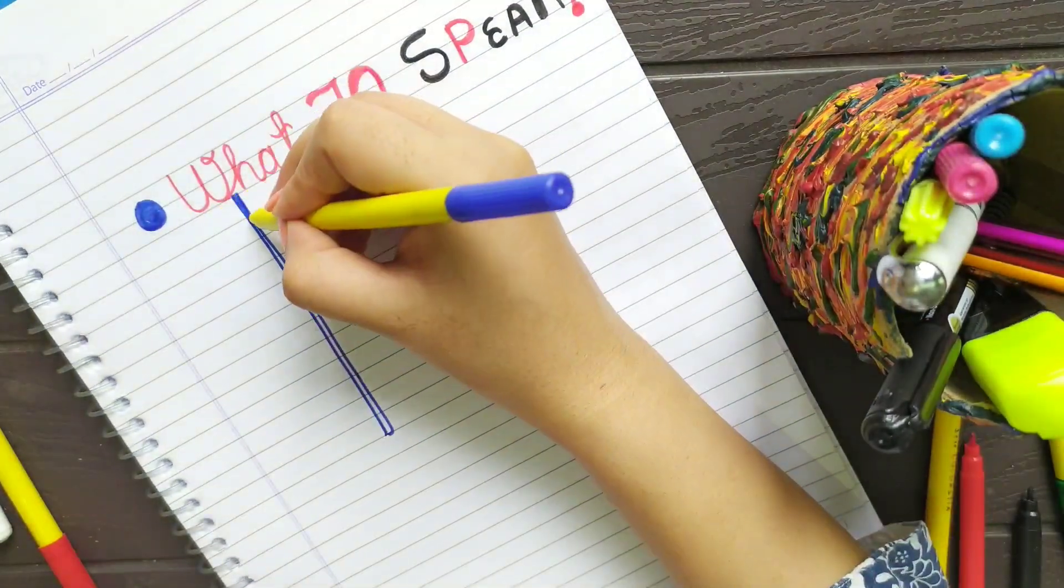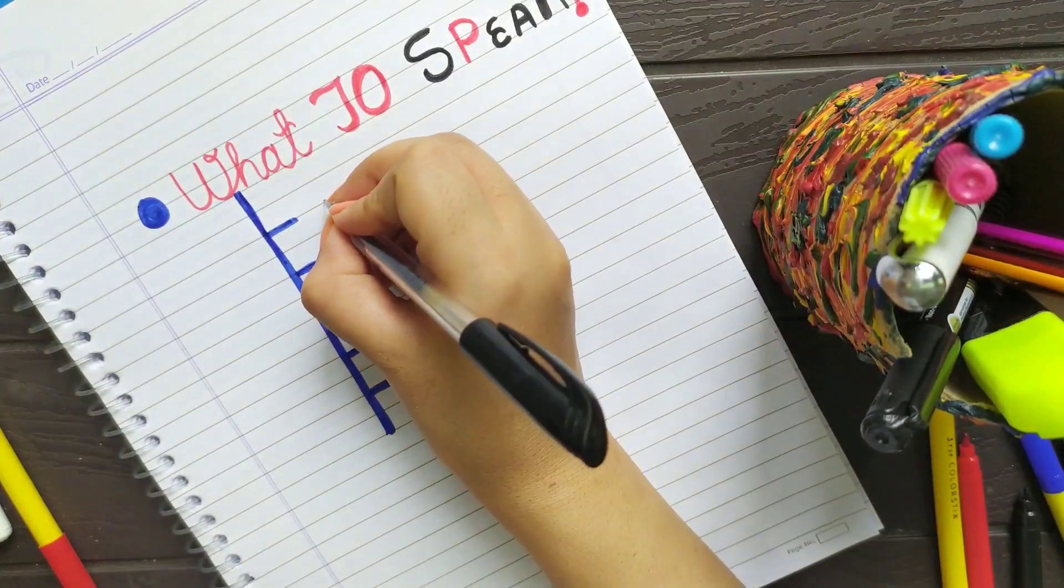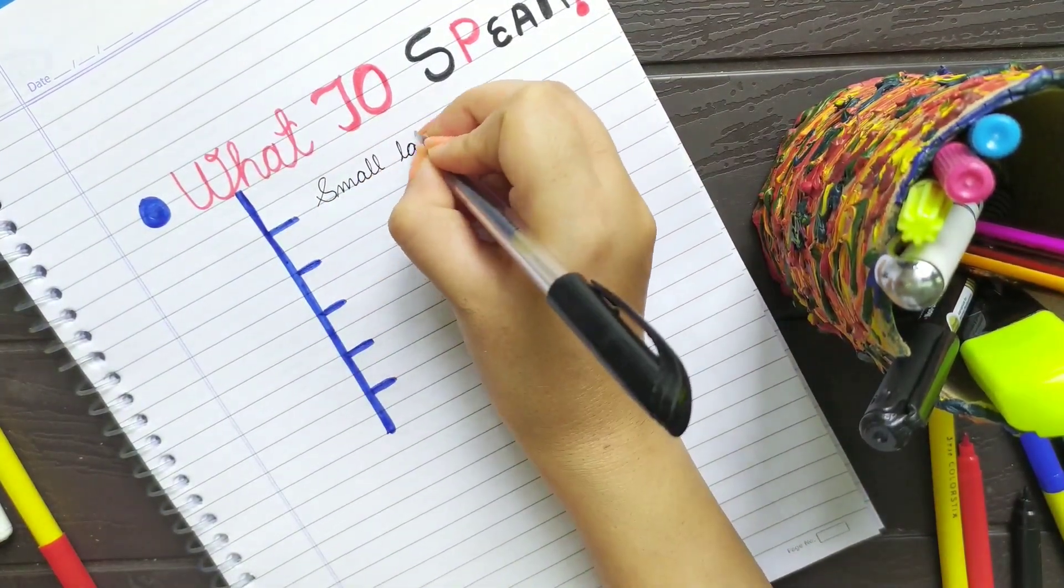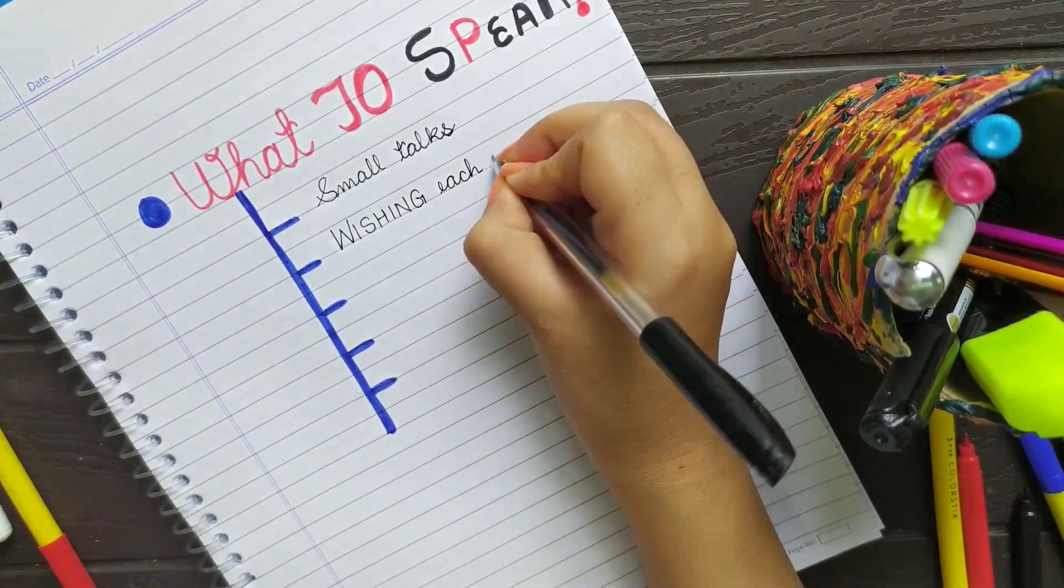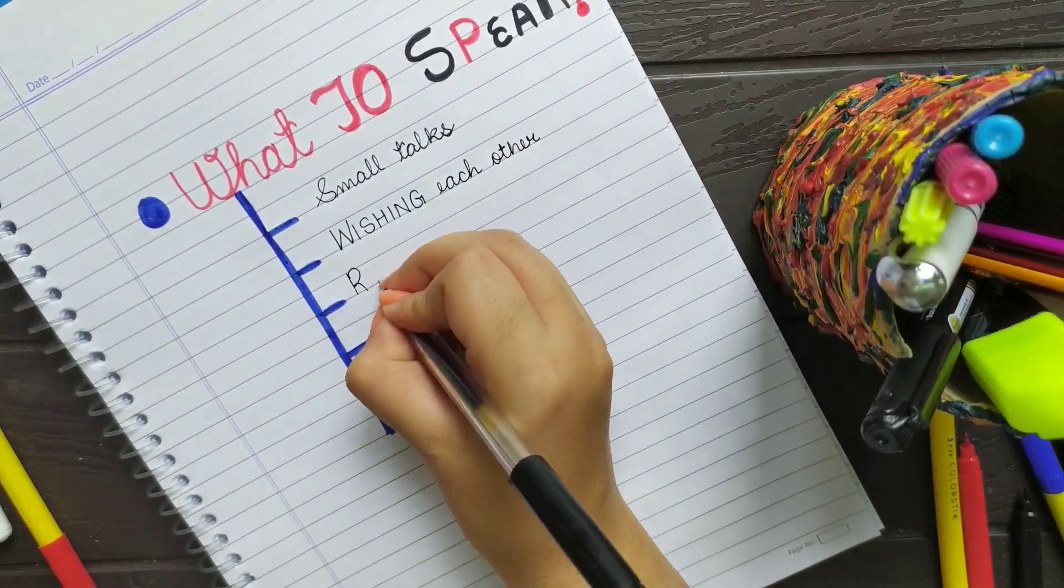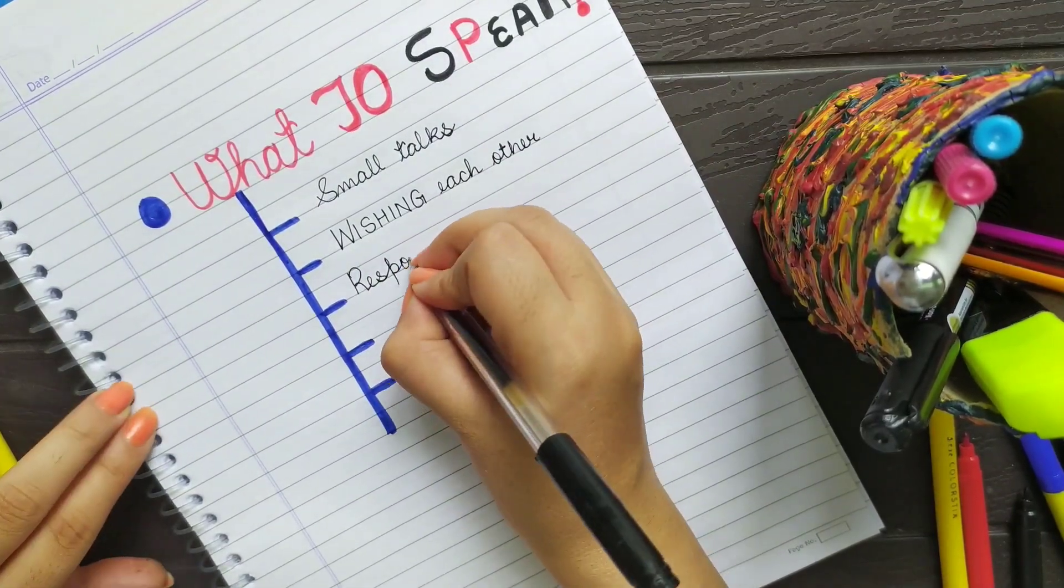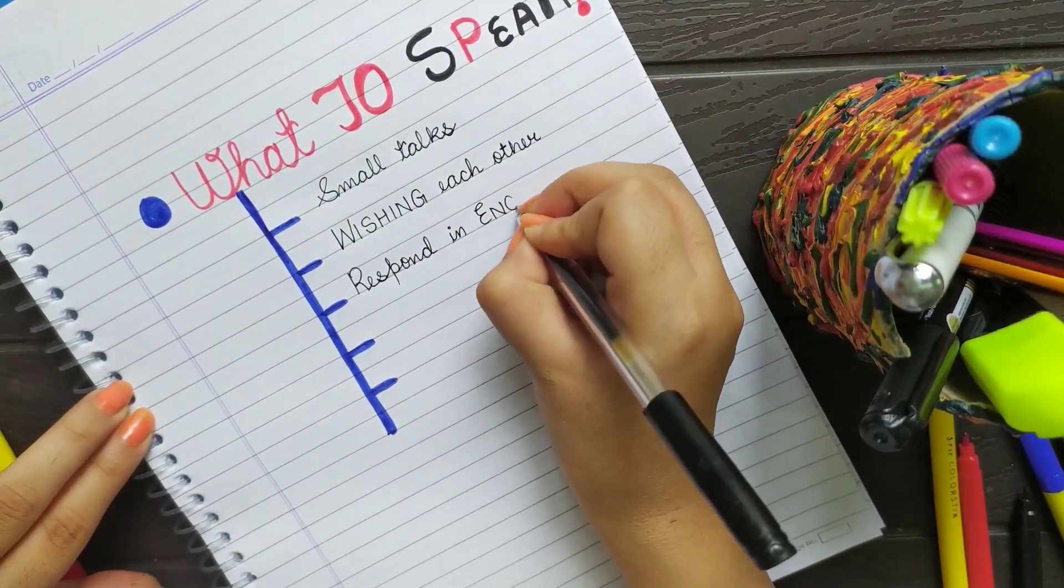You can start off with small talks like 'good morning,' 'good afternoon,' 'how are you.' You could wish each other in English language, or when somebody asks you something, try to respond in English. The best thing you can do is to write on a topic which interests you and sit in front of a mirror and speak to yourself as if you are in front of an audience.